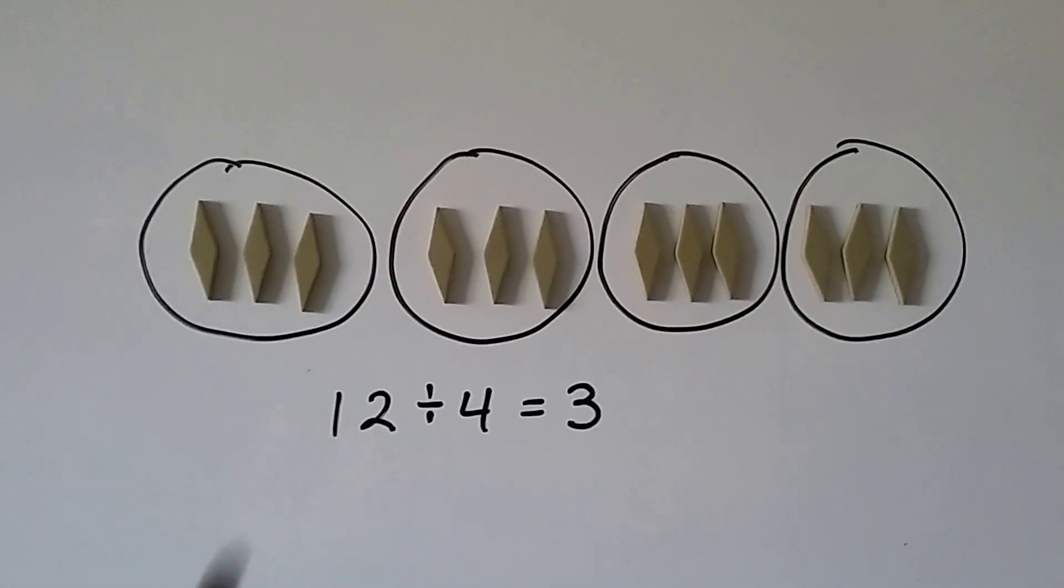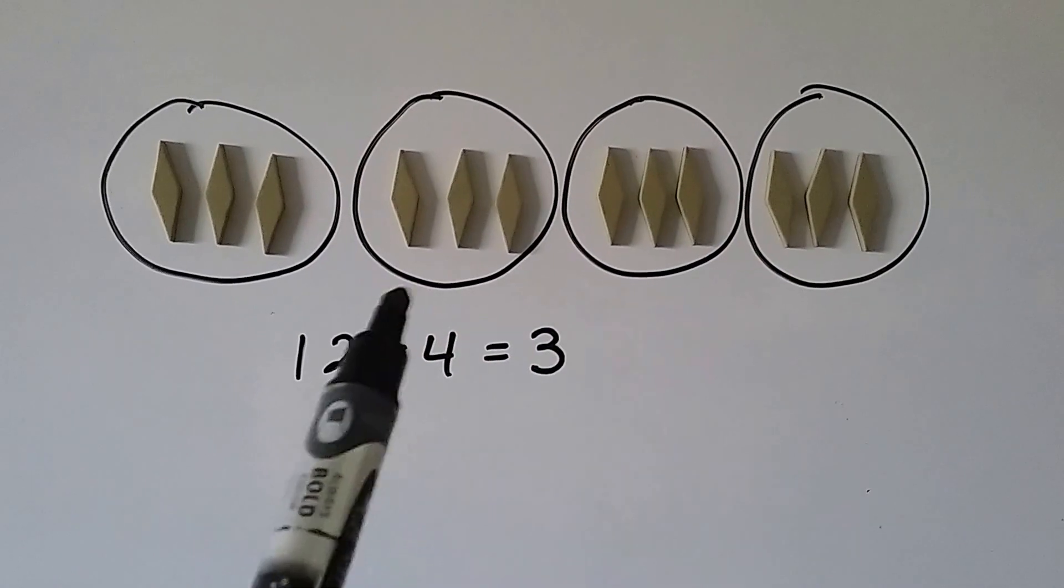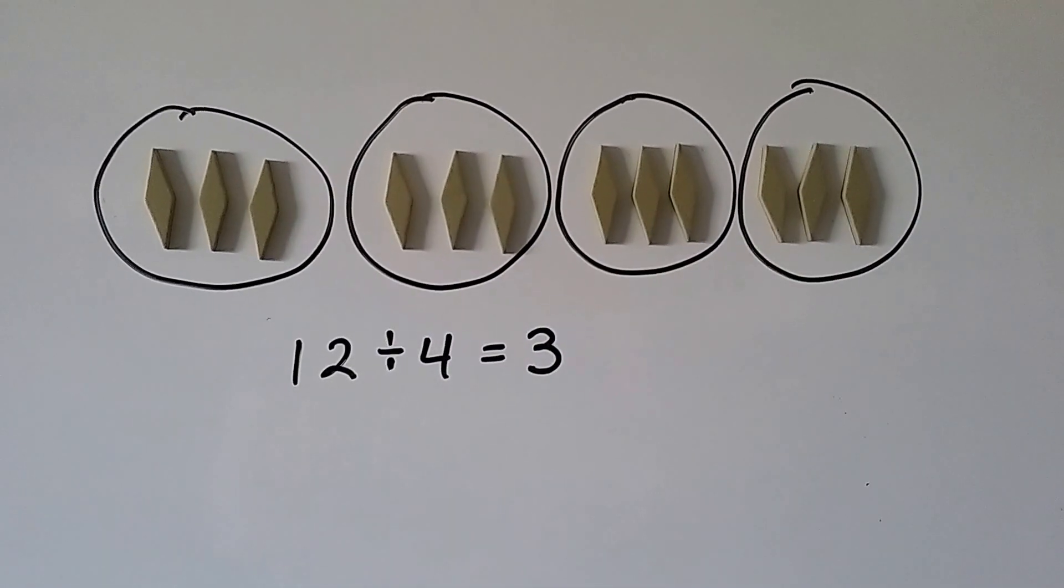Look at this one. Now we have twelve diamonds in four groups, and there's three in each group.